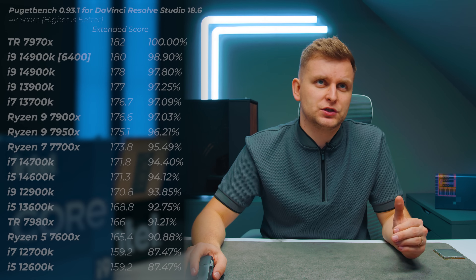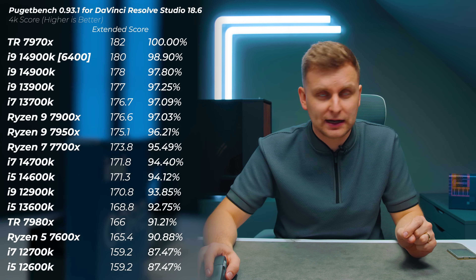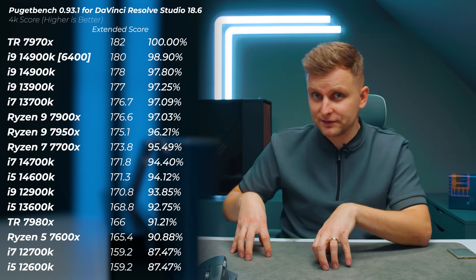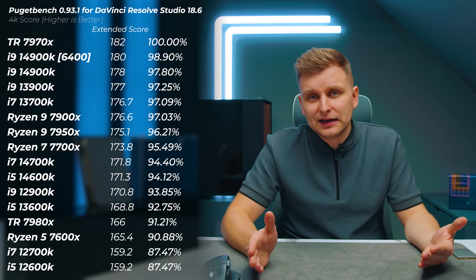For the 4K media score, the Threadripper 7970X tops the chart at only 1.1% faster than the i9-14900K — probably not worth the cost. The test bench uses an RTX 3090, so we're likely GPU-bottlenecked rather than CPU-bottlenecked. Notably, there's only about an 8% difference between the i5-13600K at the bottom of the mid-pack and the fastest CPU, which you're really not going to notice.